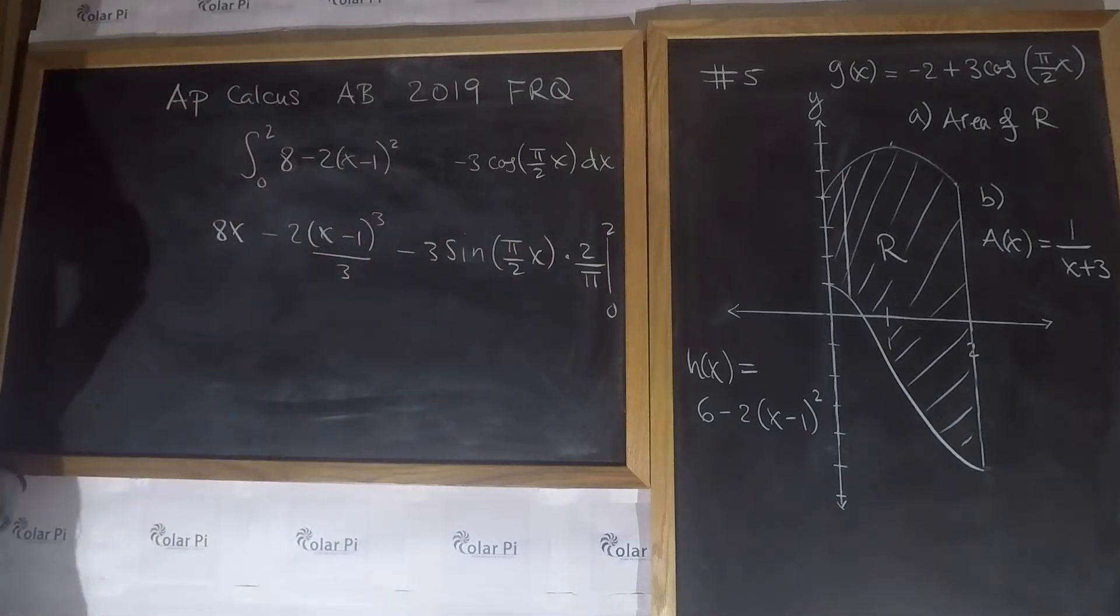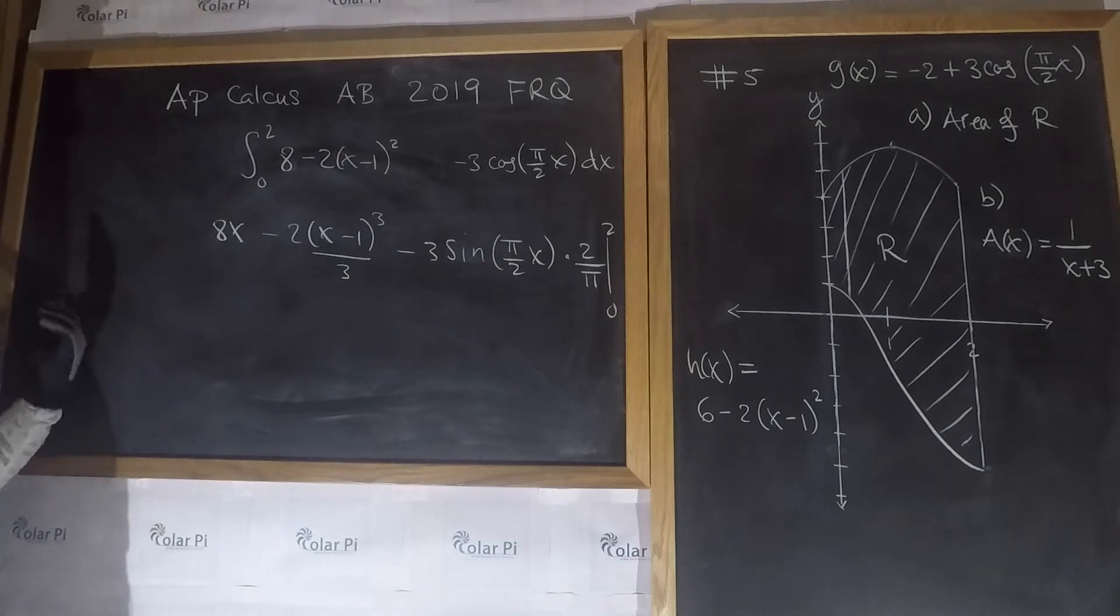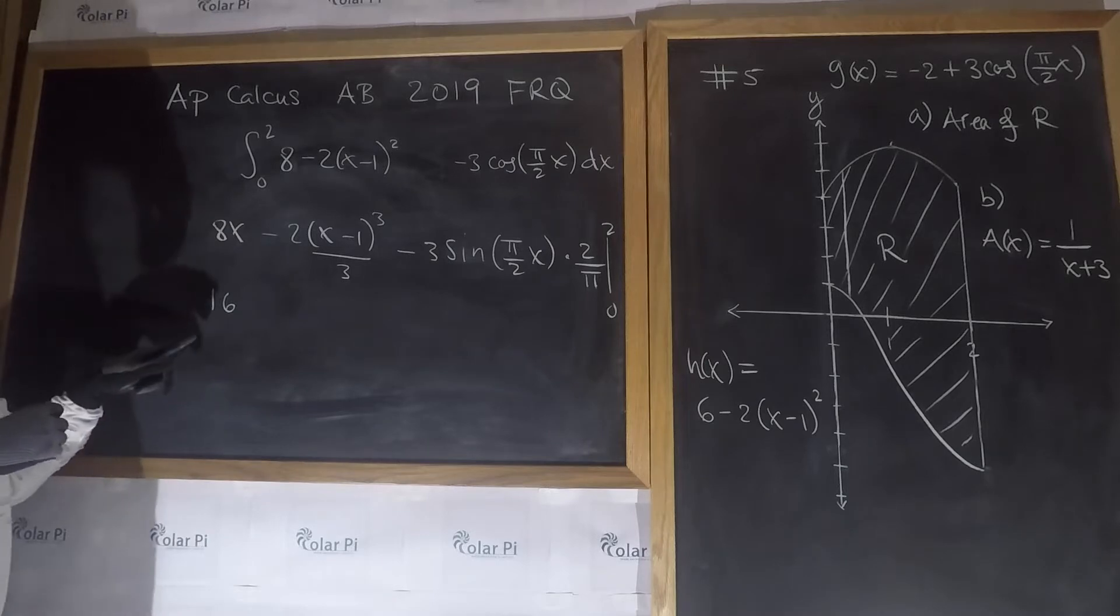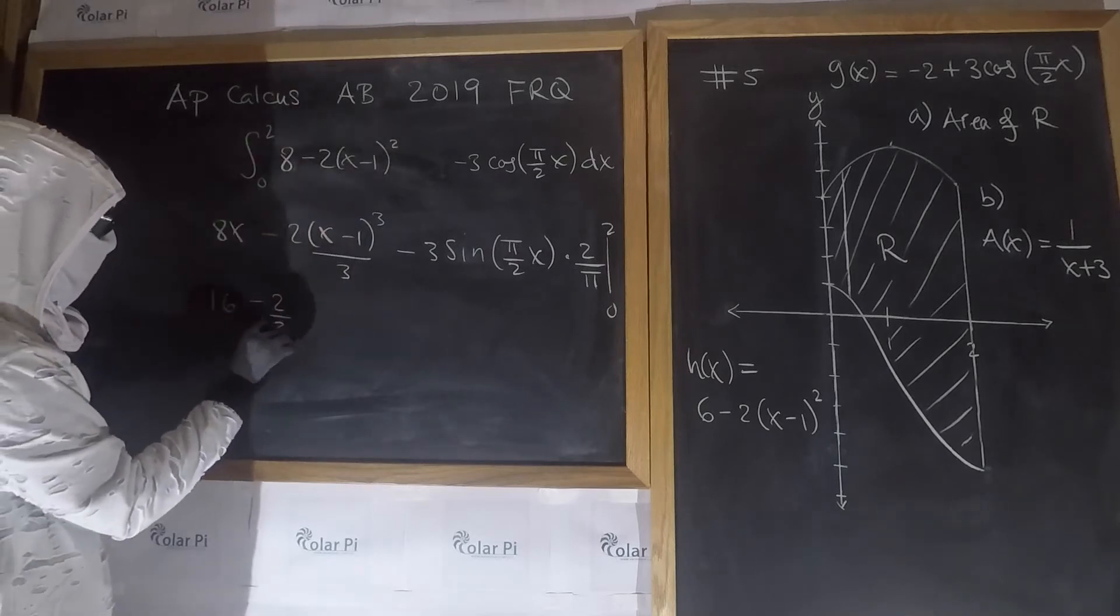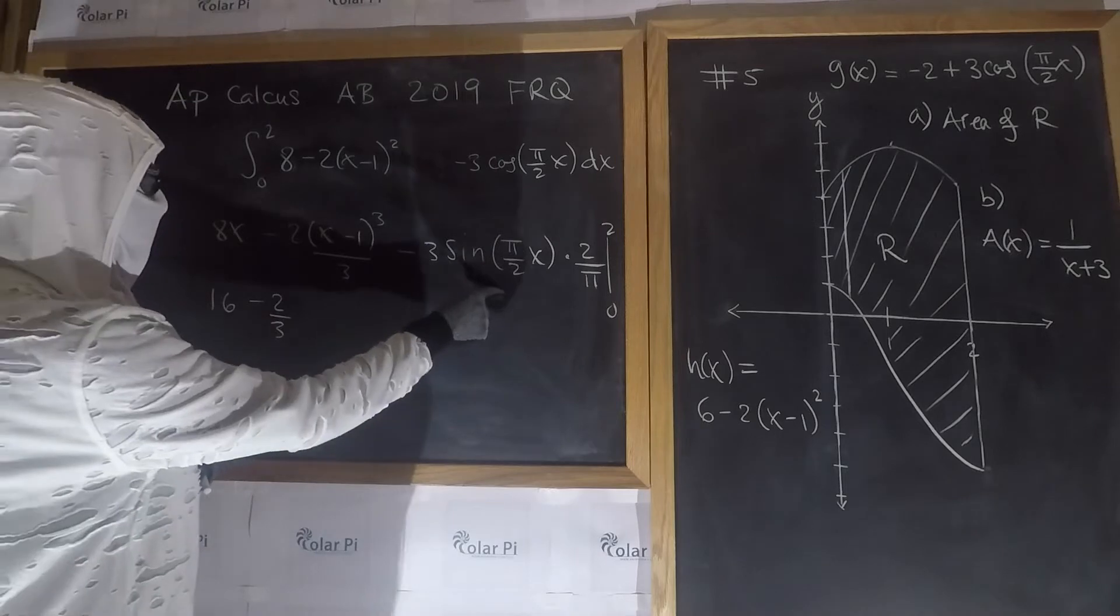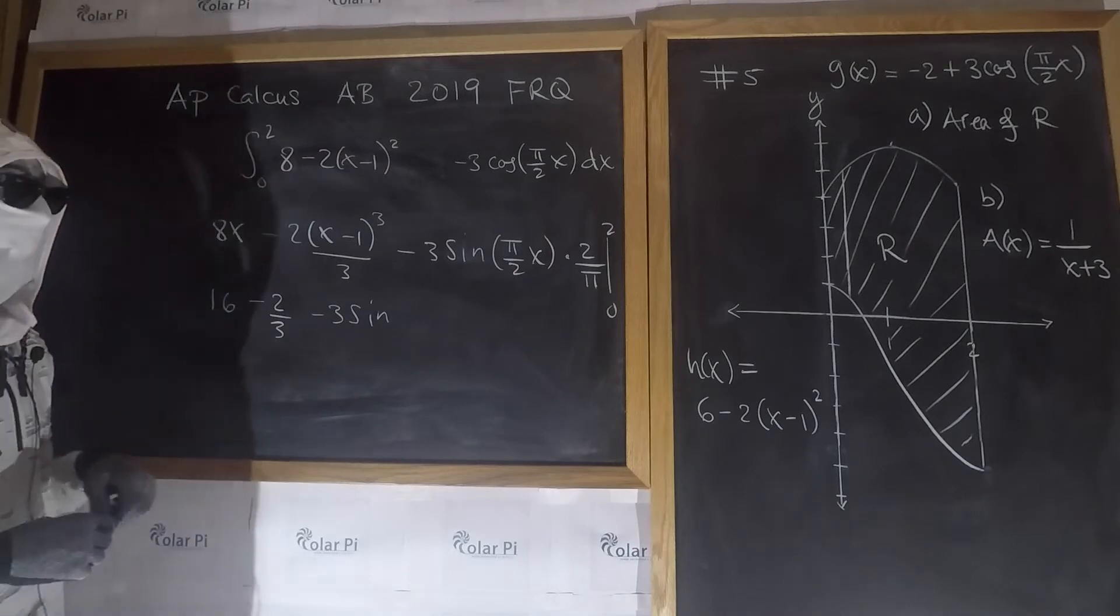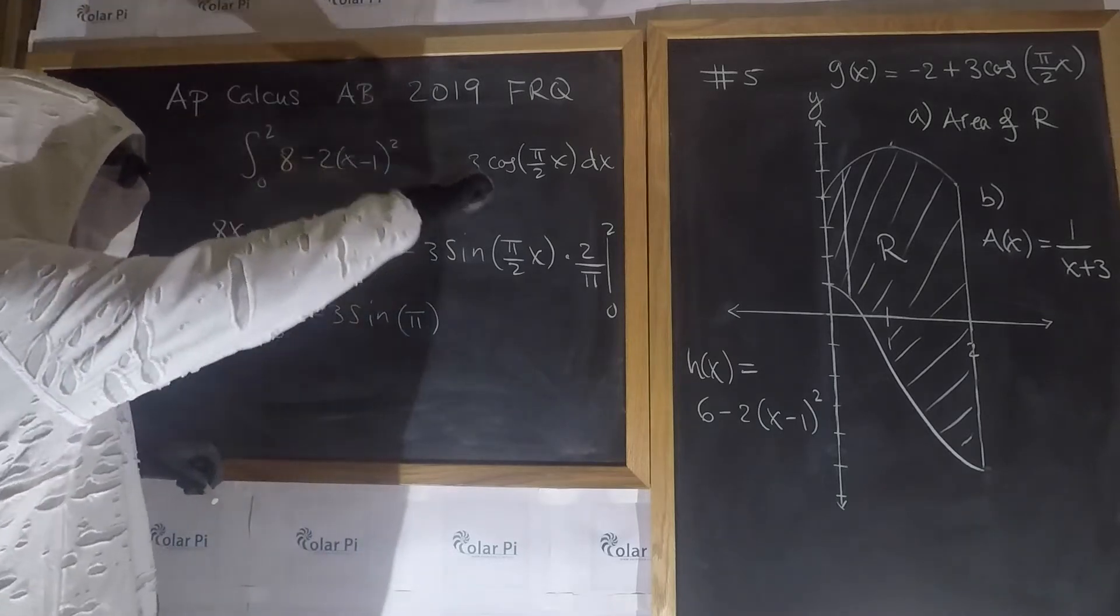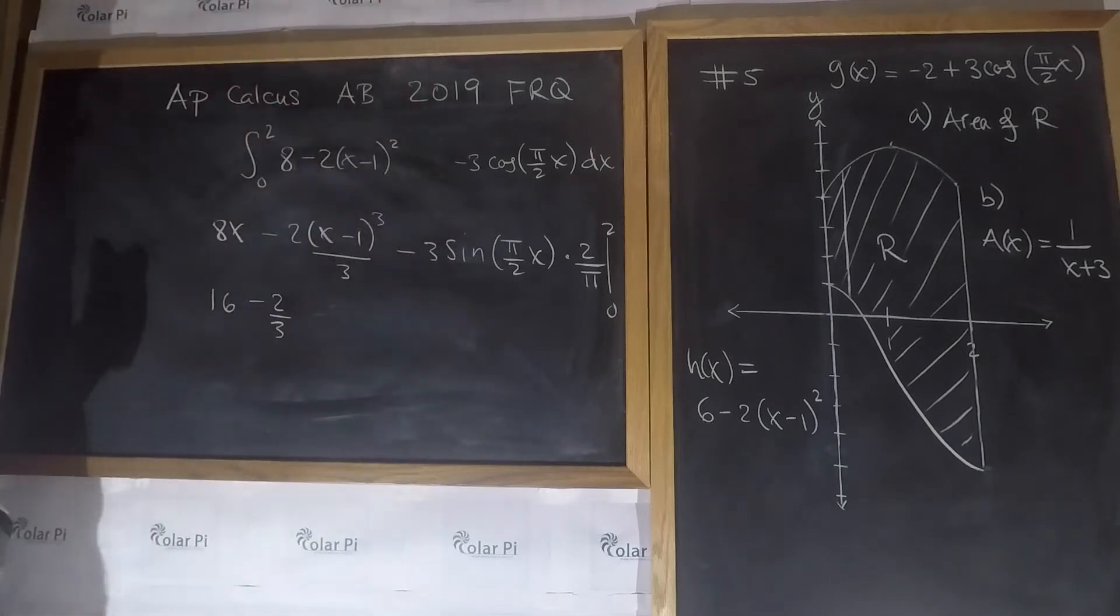I plug in 2, and then I plug in 0 and take the difference. I hope 0 makes things nice. So I have 16 minus 2 thirds, and if I plug in 2 in here, I get minus 3 times sine of pi over 2 times 2. That's sine of pi, but sine of pi is 0. Remember, sine is the one that starts at 0 and comes down, so it's 0. Thank the Lord Jesus Christ, that's gone.